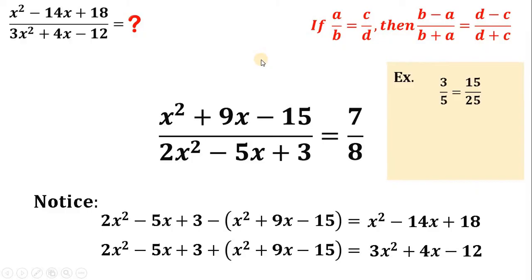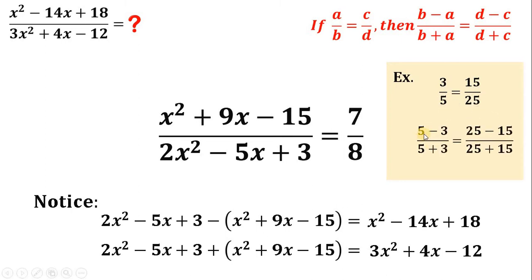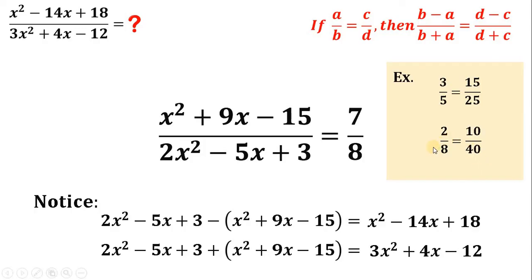Let's use some examples to verify this identity. Take 3 over 5 equals 15 over 25 — they are equal because 15 over 25 simplifies to 3 over 5. Applying the identity: 5 minus 3 over 5 plus 3 equals 25 minus 15 over 25 plus 15. That gives 2 over 8 on the left, and 10 over 40 on the right. Both simplify to 1 fourth, so the identity is confirmed.